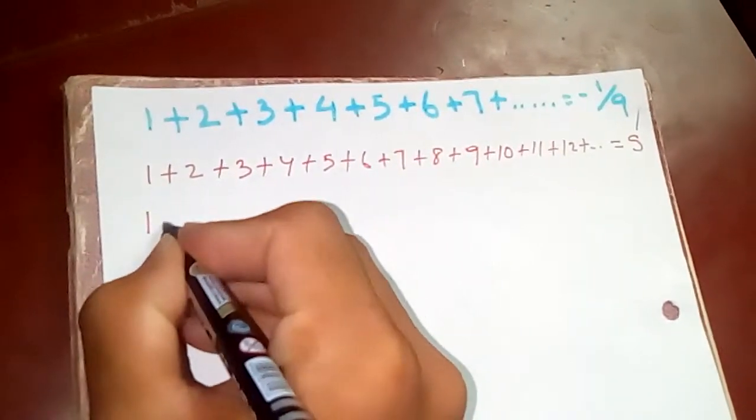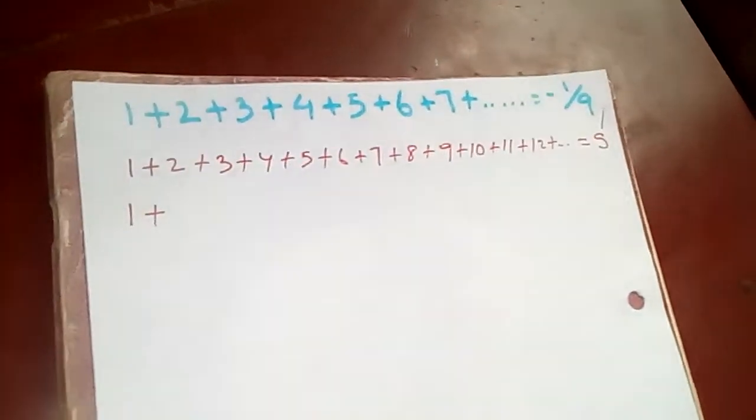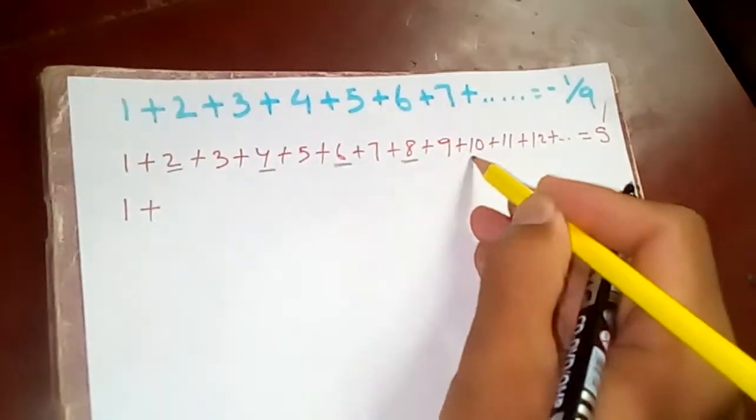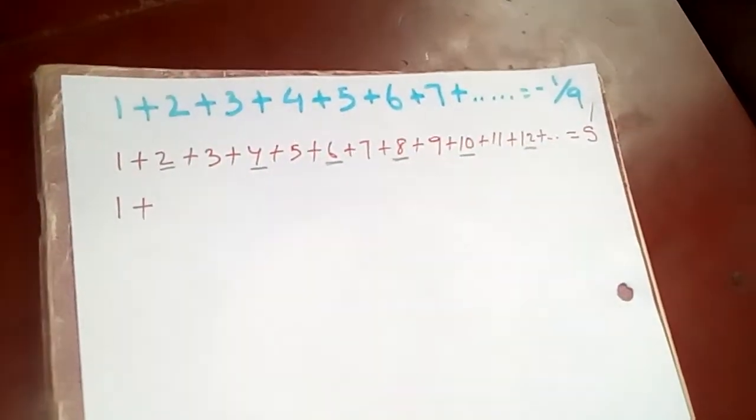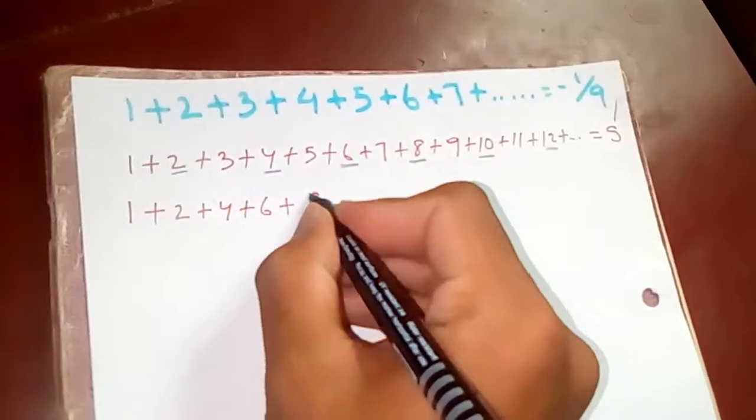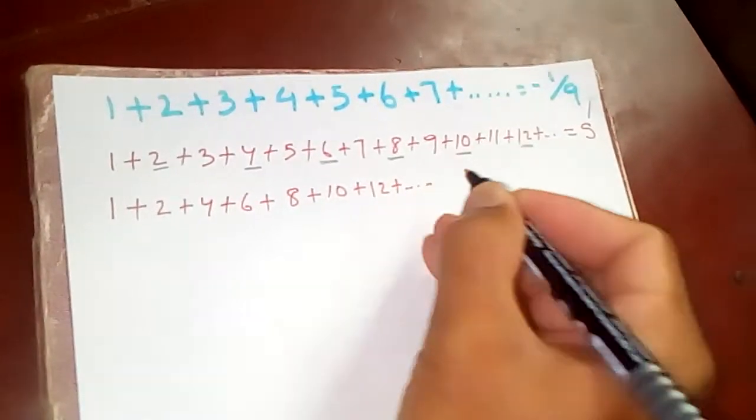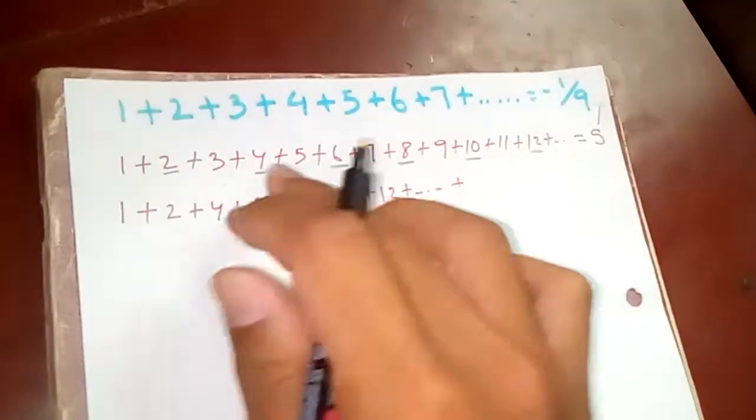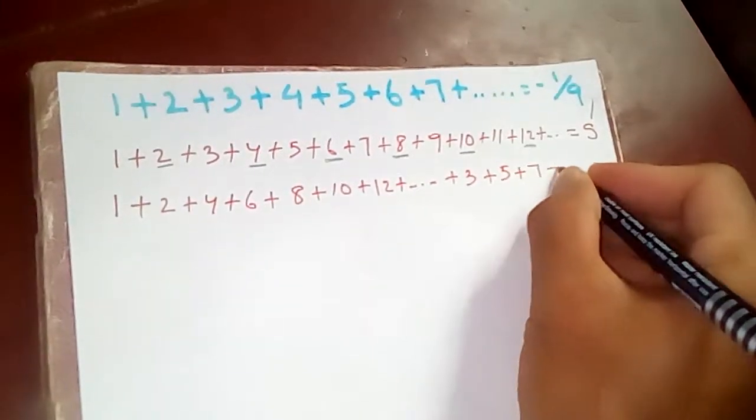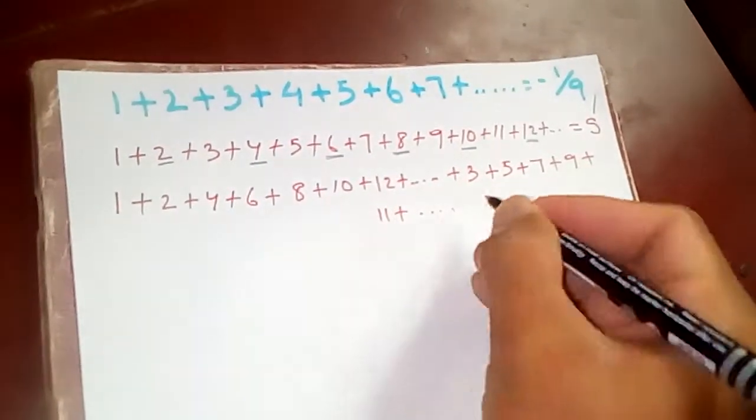So keeping one S in this and taking out even numbers. This one, if I take out, what? Two plus four plus six plus eight plus ten plus twelve and so on. And plus, now what number? Three plus five plus seven plus nine plus eleven and so on. Here we go on.